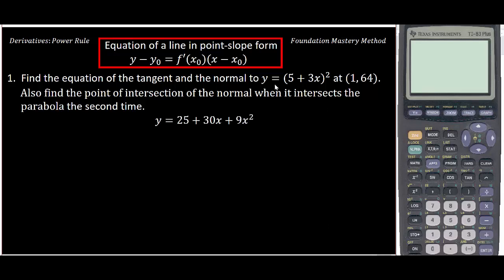First we foil (5 + 3x)(5 + 3x), which gives 25 + 30x + 9x². Now we take the derivative, which gives 30 + 18x. When we replace x by 1, we get 48.